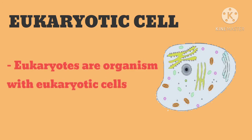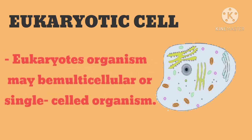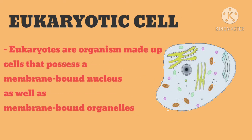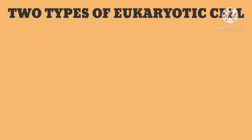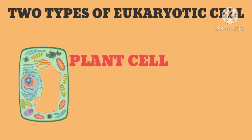Tumako naman tayo sa eukaryotic cell. Kung prokaryotes ang tawag sa organism na mayroong prokaryotic cell, eukaryotes naman ang tawag sa organism na may eukaryotic cell. Karamihan ng mga eukaryotes ay multicellular dahil binubuo ang katawan nila ng iba't ibang klase ng cells, katulad ng hayop, halaman, at syempre ng tao. Eukaryotes are organisms made of cells that possess a membrane-bound nucleus as well as membrane-bound organelles. There are two types of eukaryotic cells.